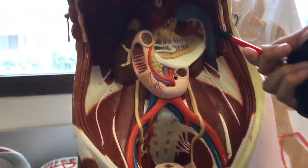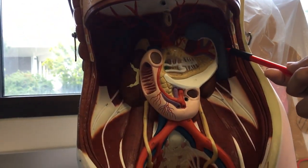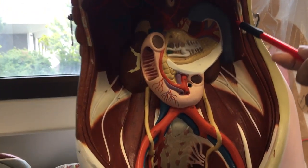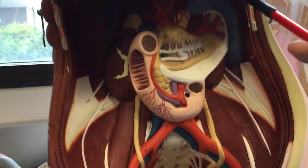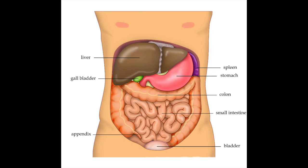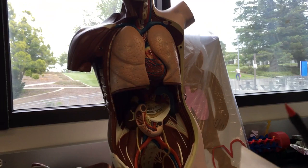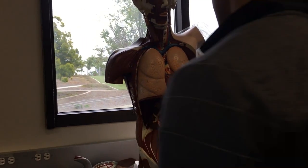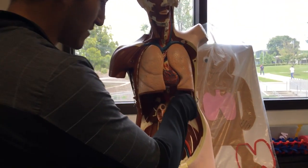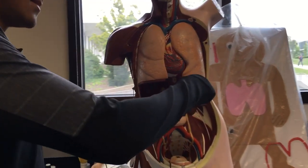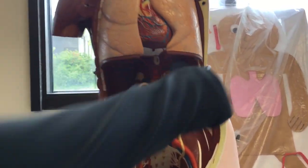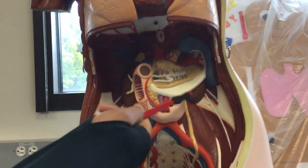The spleen is right here on the model. This is the left hypochondriac region. It's inferior to the diaphragm and above the kidney.